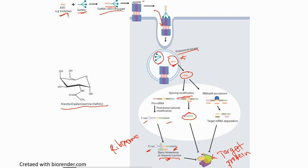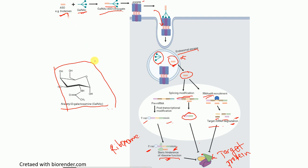The third and very important mechanism is recruitment of the enzyme RNase H. The antisense oligonucleotides recruit RNase H, which degrades the target messenger RNA. When the target mRNA is degraded, target protein production is reduced or inhibited. Also shown here is the structure of N-acetyl-D-galactosamine used for conjugation of the antisense oligonucleotides.